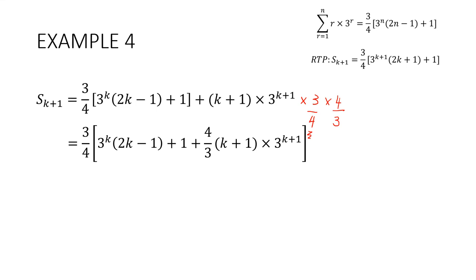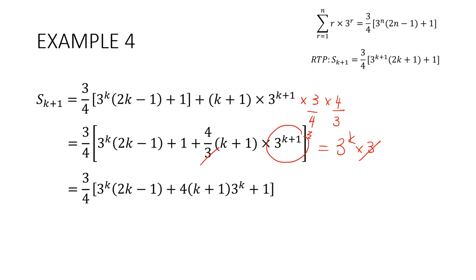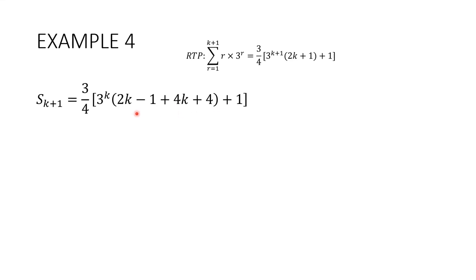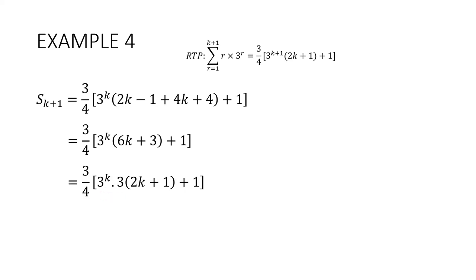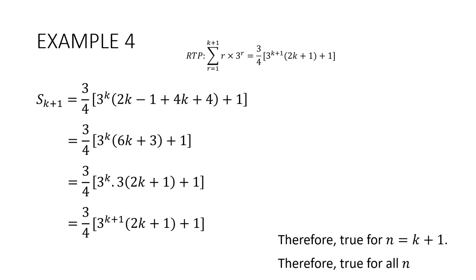I have three-quarters multiplied by 3 to the k times 2k minus 1 plus four-thirds times k plus 1 times 3 to the k plus 1. Since 3 to the k plus 1 equals 3 to the k times 3, the 3 in the numerator cancels the 3 in the denominator. Rewriting gives three-quarters outside of 3 to the k times 2k minus 1 plus 4 times k plus 1, with the plus 1 moved to the end. Factoring out 3 to the k, inside the brackets I get 2k minus 1 plus 4k plus 4, which tidies to 6k plus 3, with a common factor of 3. Pulling that out gives 3 to the k plus 1, matching the required result. It is true for n equals k plus 1; therefore it is true for all n.